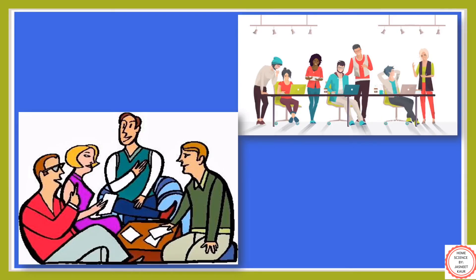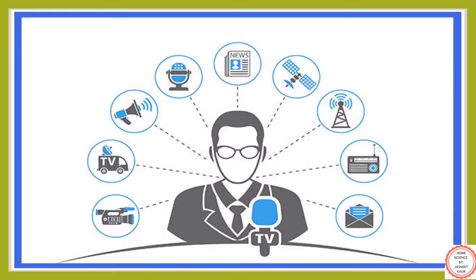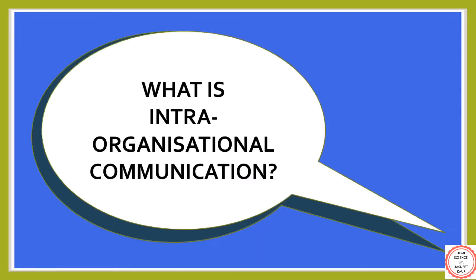Next is mass communication. As the name suggests, mass communication means passing information or interacting with a large number of people at one time. Knowledge and information is imparted to a large group of people at one particular moment with the help of technology. Examples include promotion of a new product in the market, passing information during a disaster, or everyday news on news channels.